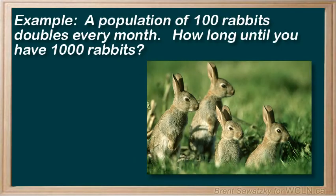A population of 100 rabbits doubles every month. How long until you have a thousand rabbits? Now since we're told that it's doubling every month, we know that we're looking at exponential growth. The population doubles after the first compounding period, that is after the first month, and then the new population doubles again during the second compounding period or the second month, and so on.